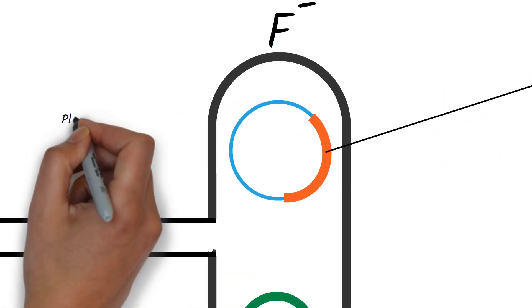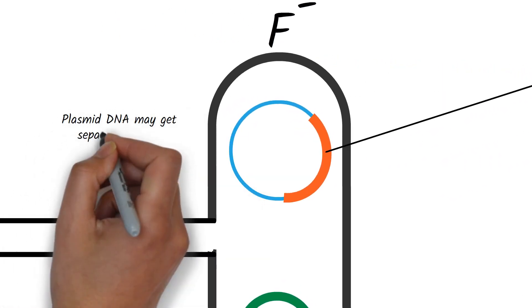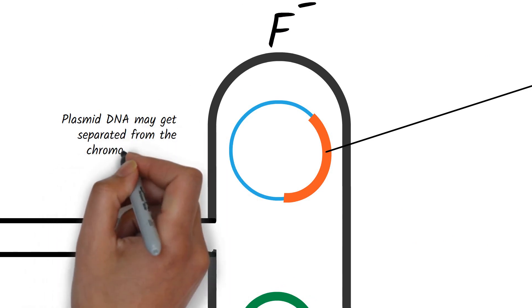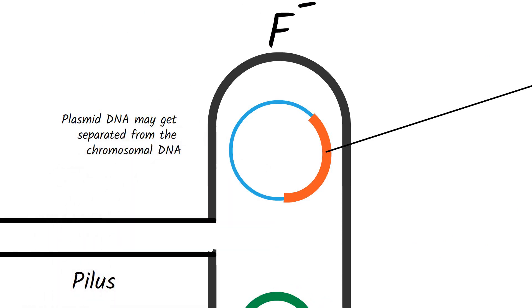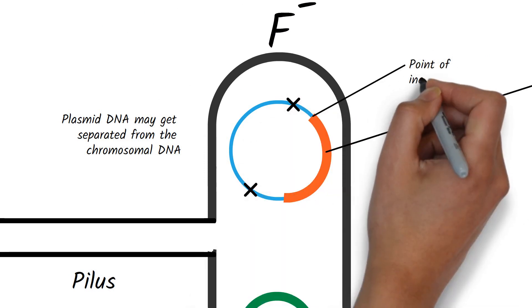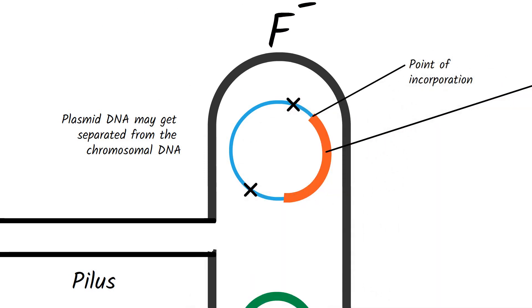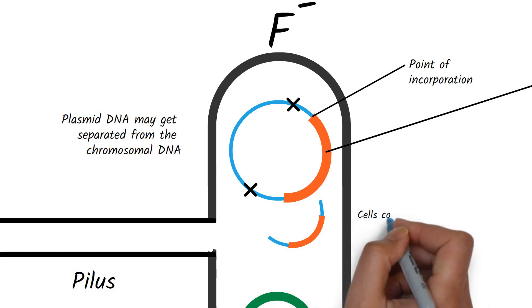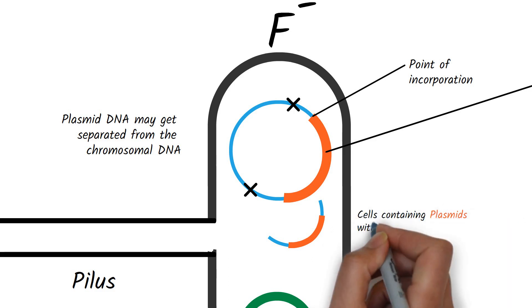In some cases, the plasmid DNA may get separated from the chromosomal DNA. During this separation process, the breakage may occur at other location, different from the point of incorporation. As a result of this, some part of the chromosomal DNA will be carried by the plasmid DNA. Cells containing plasmids with chromosomal DNA are called F prime cells.